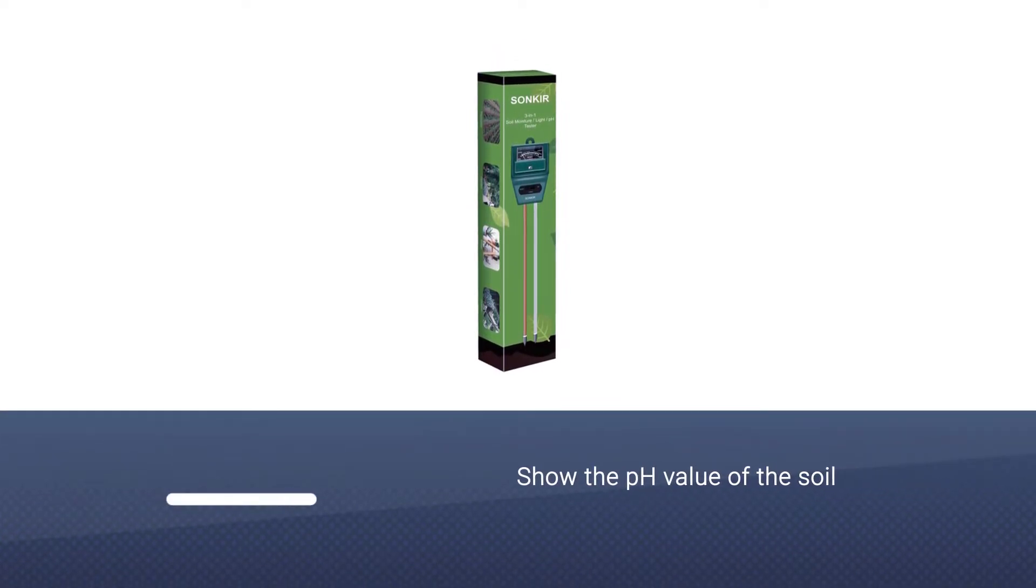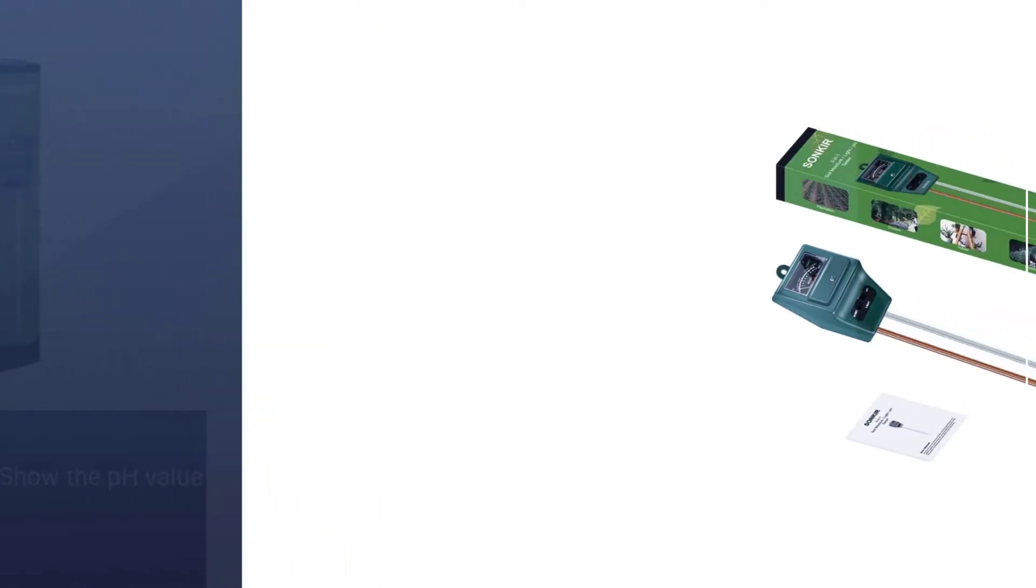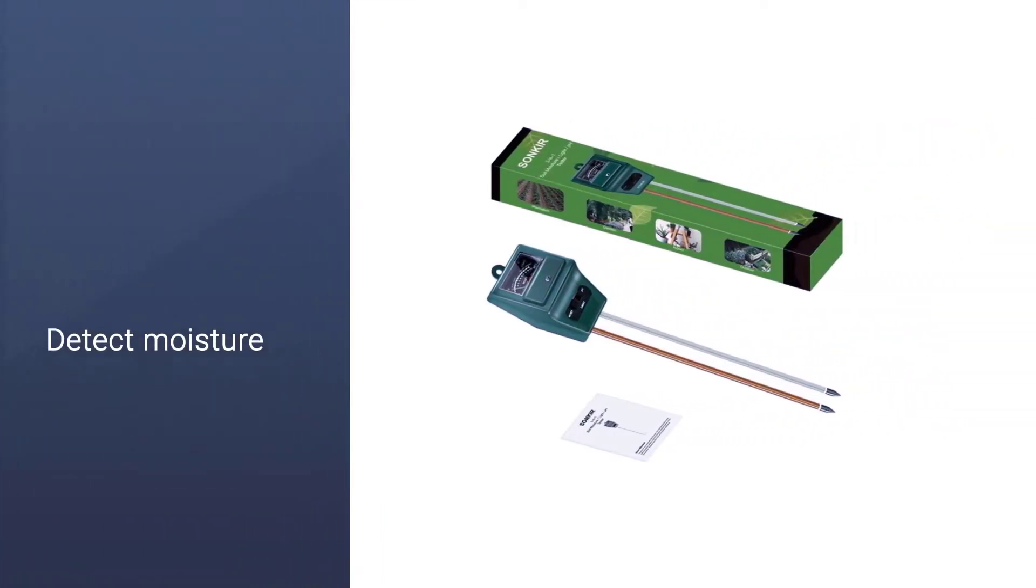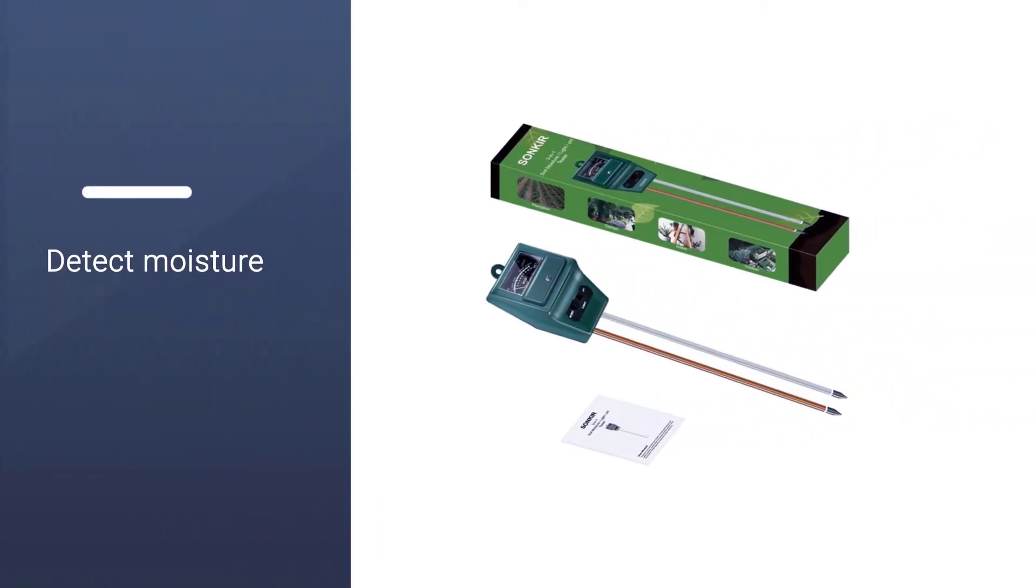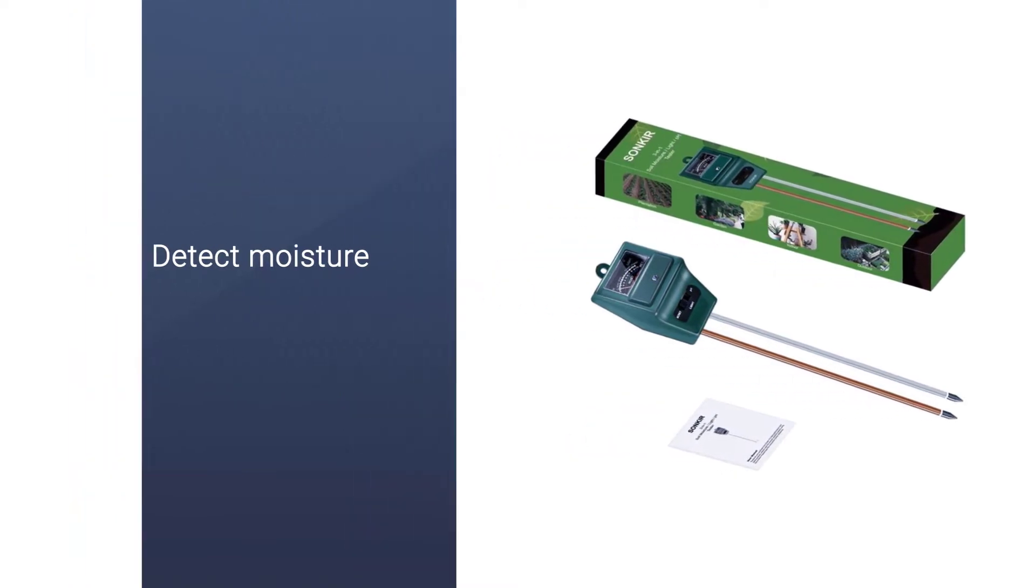With reliable and accurate scientific data detection monitoring technology, the metal dual probes enhance the speed and accuracy of analyzing pH levels, soil moisture, and lighting conditions. pH levels range from 3.5 to 8.